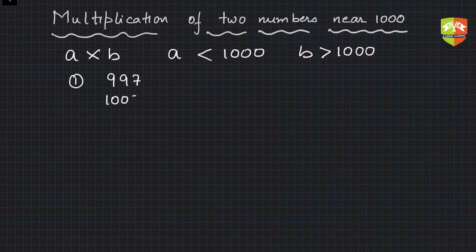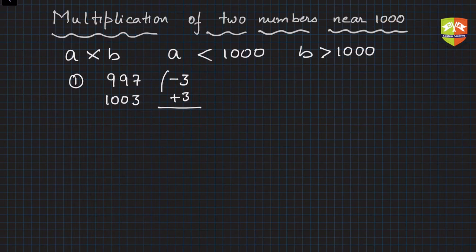We have to find out the deviations from thousand. So 997 is minus 3 from thousand, and 1003 is plus 3 from thousand. Now the next step is to multiply these two deviations to get the hundreds, tens, and units place. So minus 3 times 3 is minus 9.